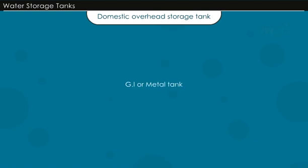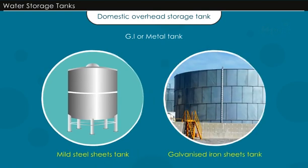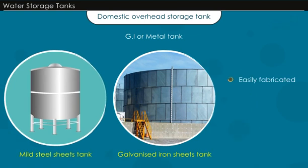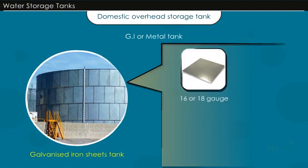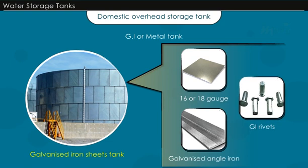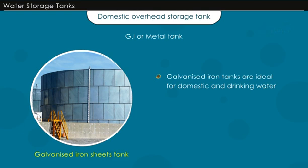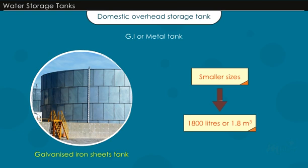GI or metal tanks fabricated from mild steel or galvanized iron sheets have traditionally been used in houses, as they can be easily fabricated and are light, durable, and easy to install. Galvanized tanks are made from GI sheets, usually 16 or 18 gauge, and are fabricated using galvanized angle iron for corner supports, with sheets riveted using GI rivets. The non-corrosive nature of galvanized tanks makes them ideal for domestic and drinking water. GI tanks can be made only in smaller sizes up to 1800 liters or 1.8 cubic meters capacity, due to the limitation of sheet sizes.